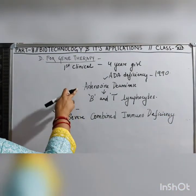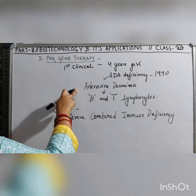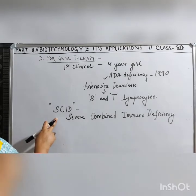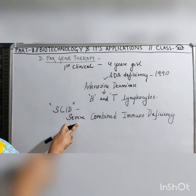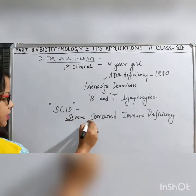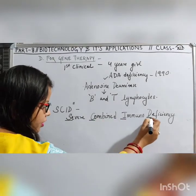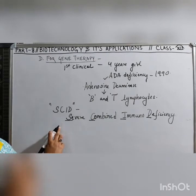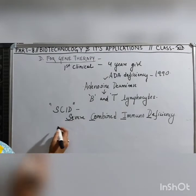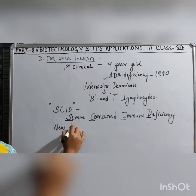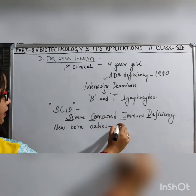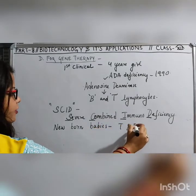Lack of this enzyme gives rise to a disease called SCID — Severe Combined Immunodeficiency Disease. This condition is mostly found in newborn babies, who lack T and B lymphocytes.